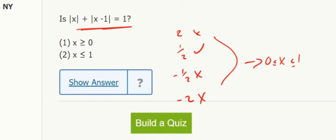If I look really quick, 1 and 0 actually do work. So number 1 tells me x is greater than or equal to 0. Well, that's one part of it. But I don't know that it's limited at 1, so that's not sufficient on its own.